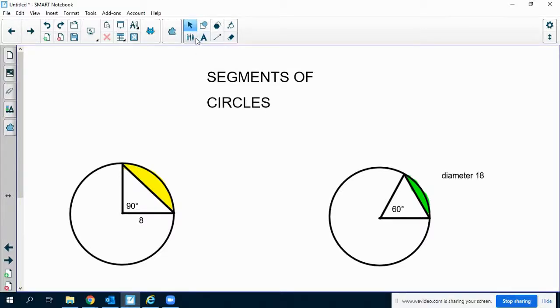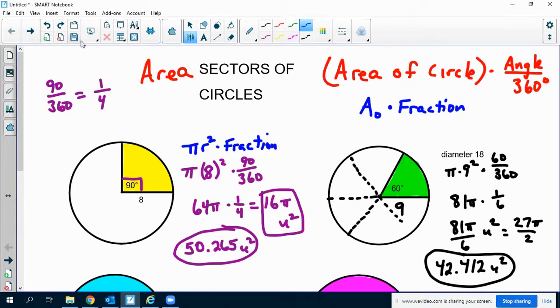We're going to talk about segments of circles and then we're going to talk about finding the area of the segments of a circle. First of all, the segment of a circle is a lot like the sector of a circle that we talked about in the previous video.